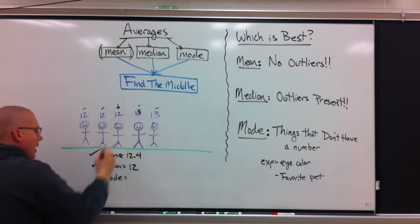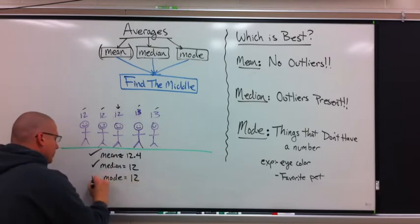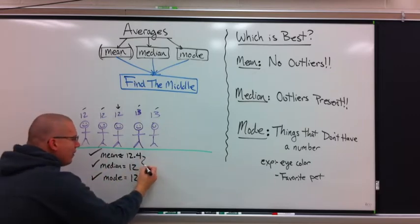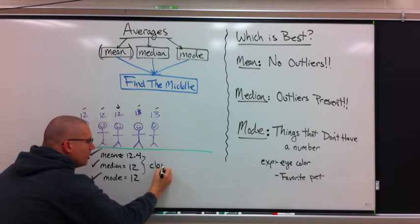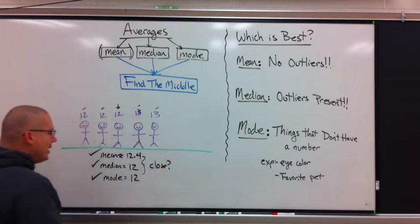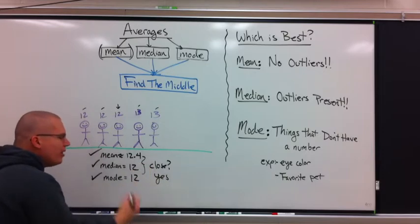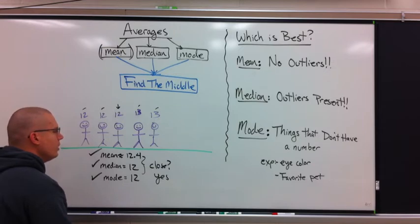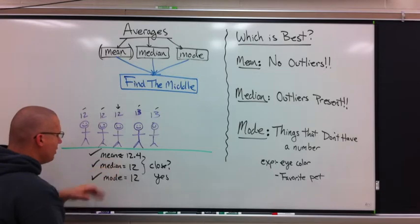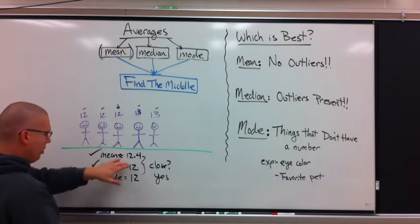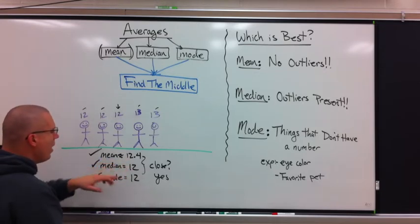Mode is most common number. I got a 12, so I put 12 here. Are all three of these fairly close? The answer is yes. So that means all three are doing their job. They're all finding the middle number. So in this case, with these numbers, I could use any one of these as the answer. What's the average? Pick one. One is not more right than another.